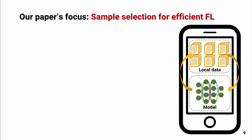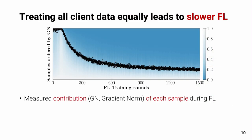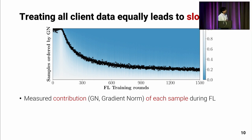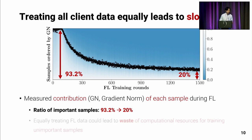Our paper's main focus is applying sample selection for efficient federated learning, while conventional federated learning approaches treat all client data equally. From our preliminary studies, we found that treating all client data equally could lead to slower federated learning. We measured the contribution of each sample during each round, and found that the ratio of important samples at the early stage was 90%, but decreased significantly to 20% at the latter stage. This implies that equally training on all data wastes computational resources on unimportant samples.